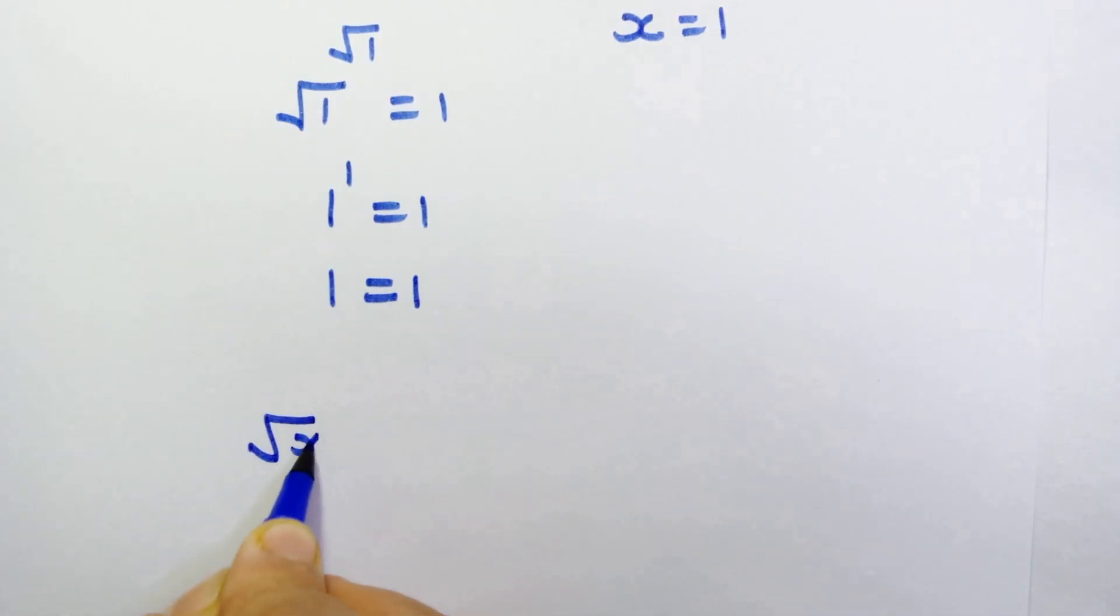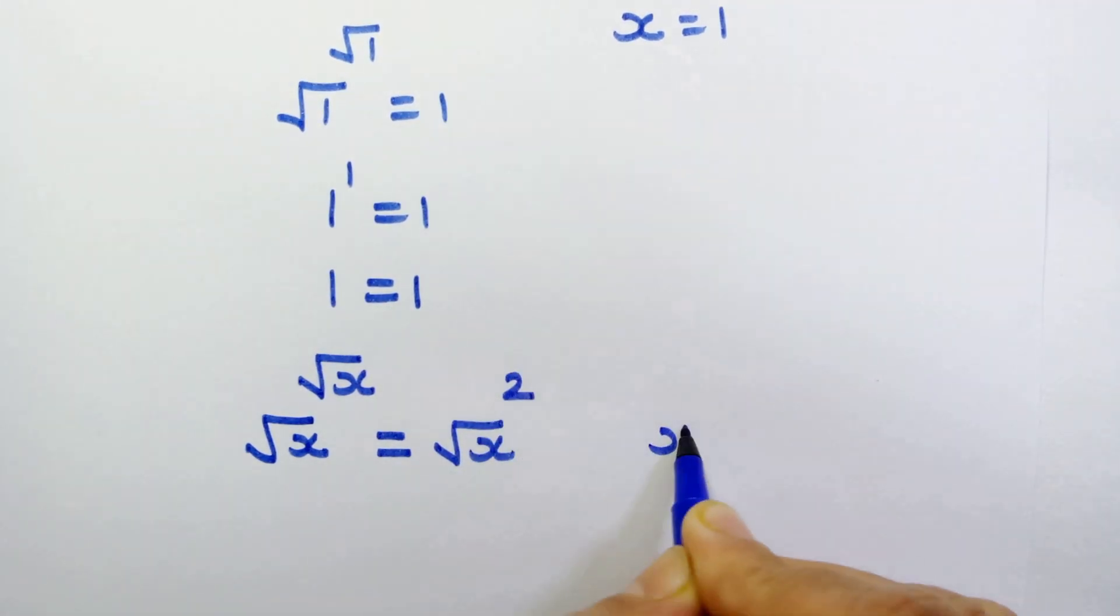We can also write this as √x raised to √x equals √x squared, because x equals √x times √x, right?